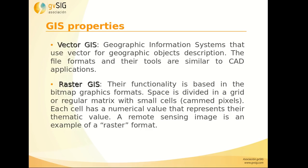Vector GIS uses vector for geographic object description — the tools are similar to CAD, with polylines, points, texts, etc. Raster GIS is based on a bitmap graphics format where space is divided into a grid of small cells, each called a pixel, with a numerical value representing the thematic value — for example, the height in a digital elevation model, or the color value in an orthophoto.